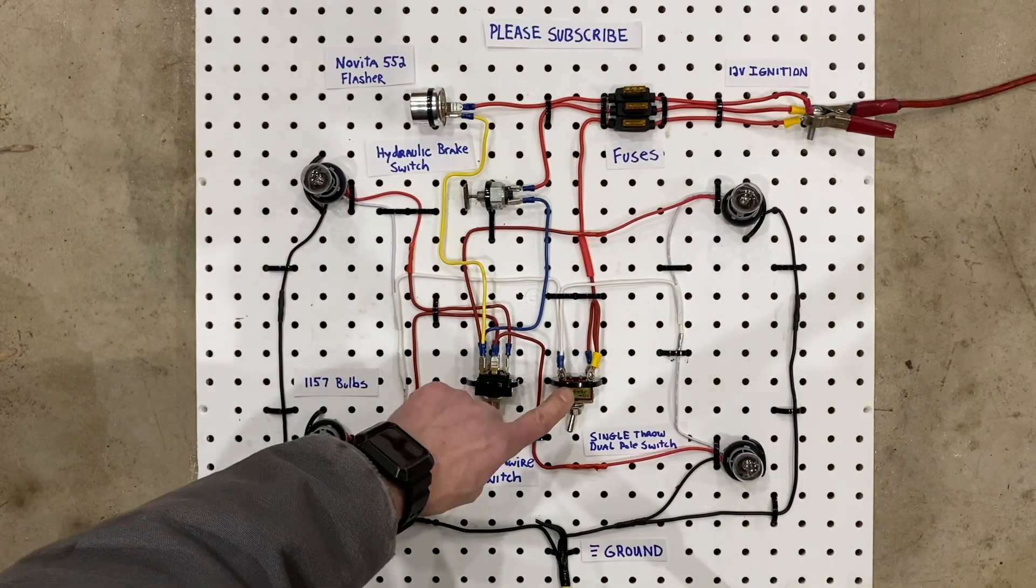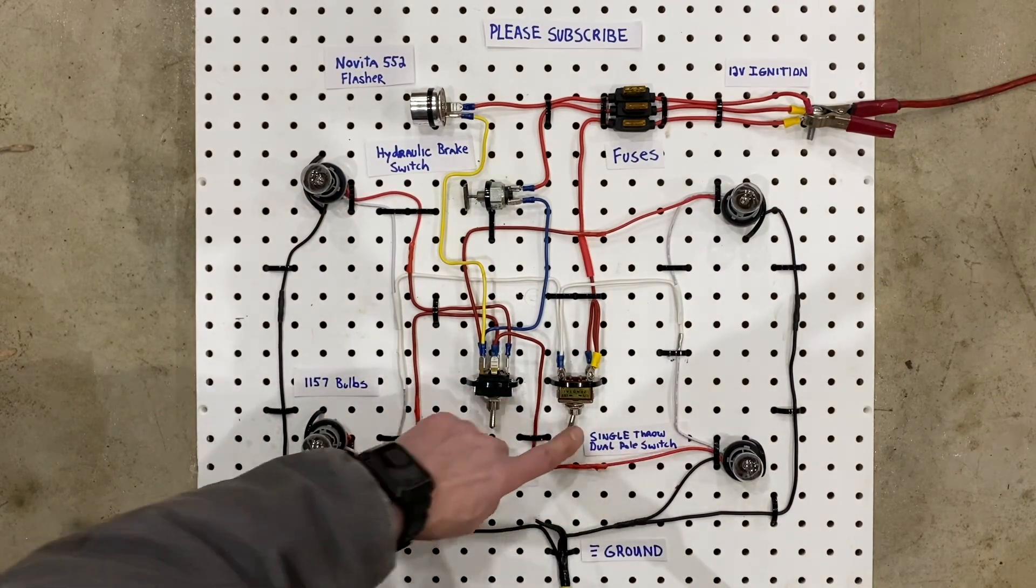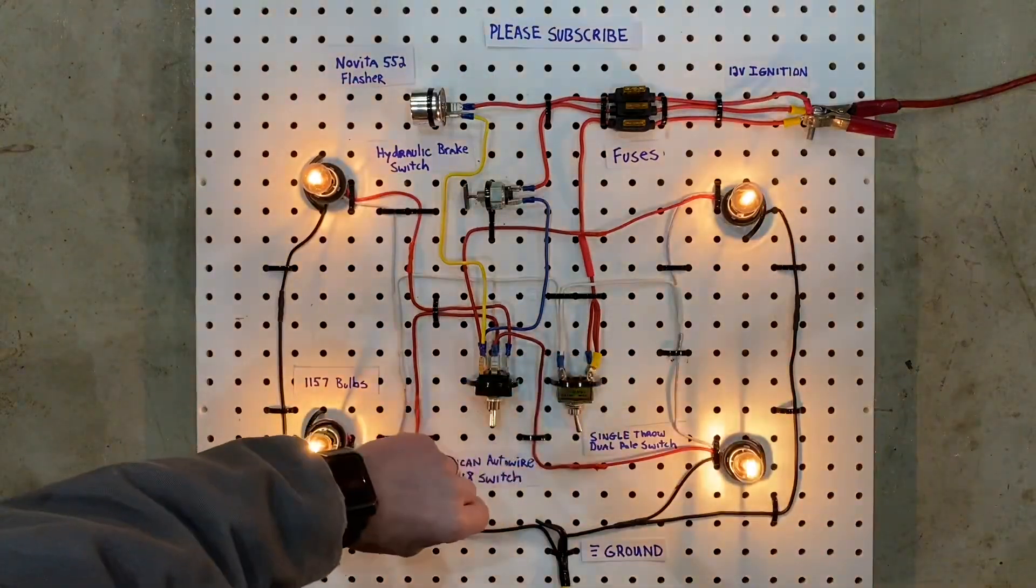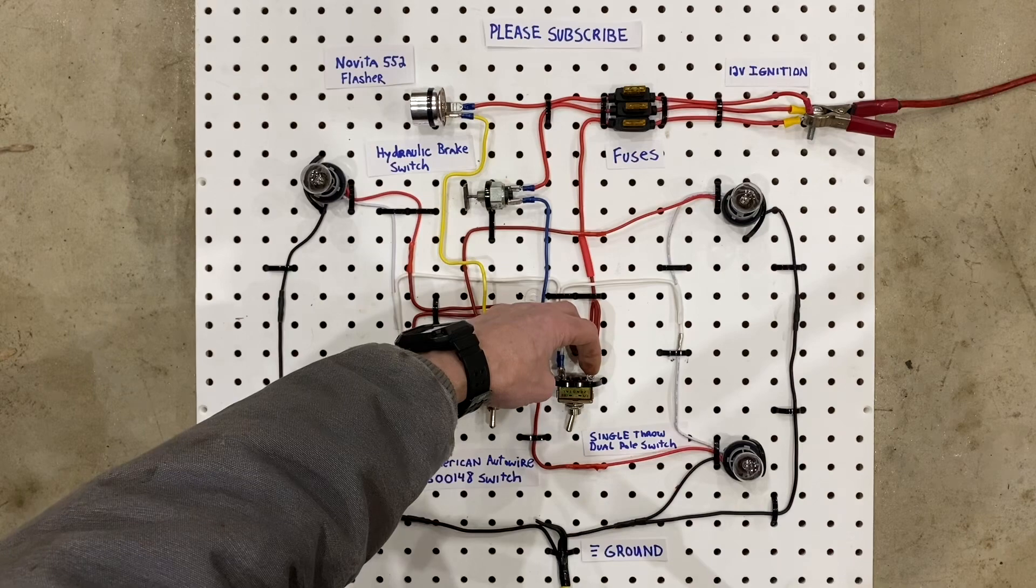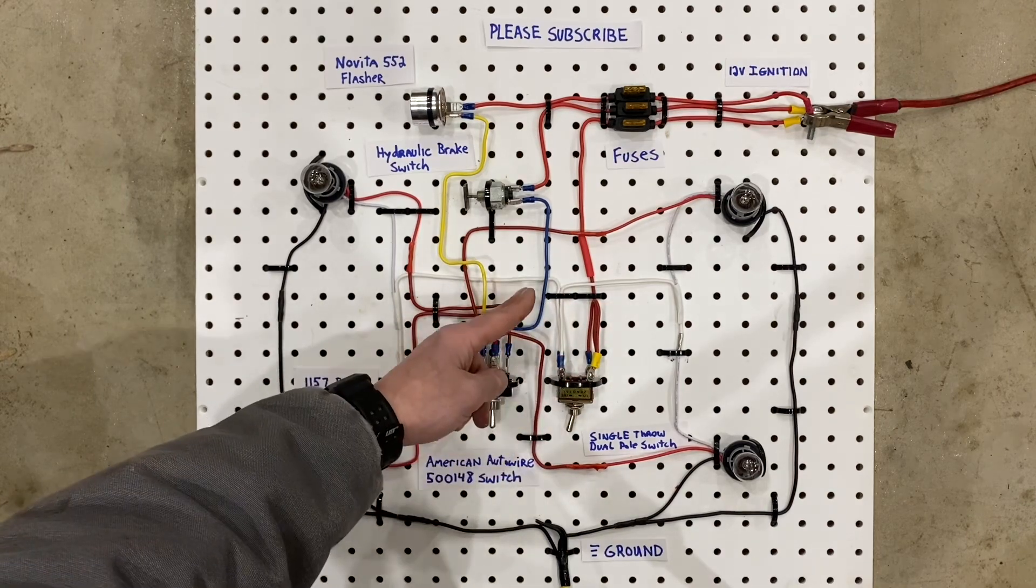Now this right here is a single throw dual pole switch. Single throw means that it's either on or off. Dual pole means that it has two power inputs and two power outputs.